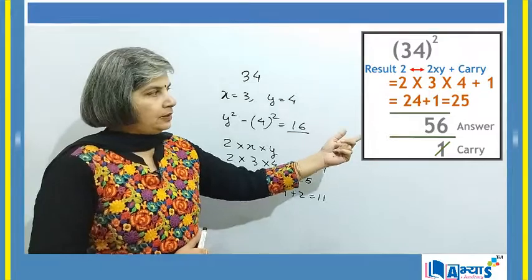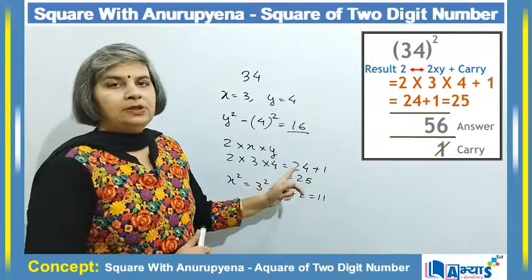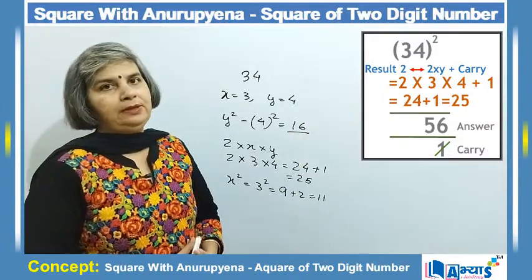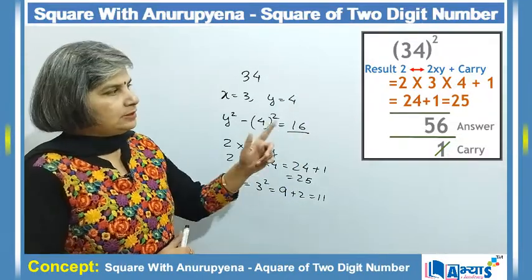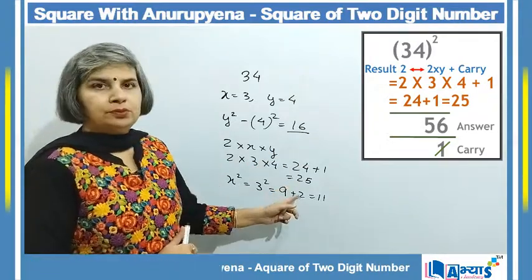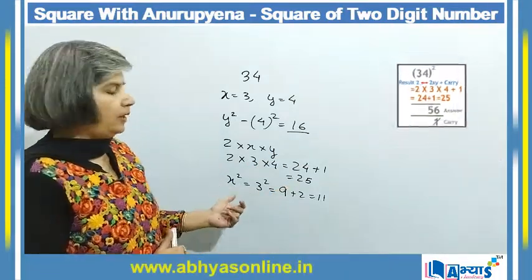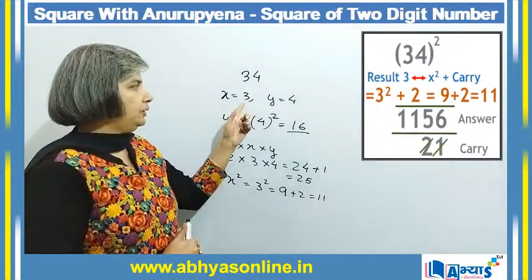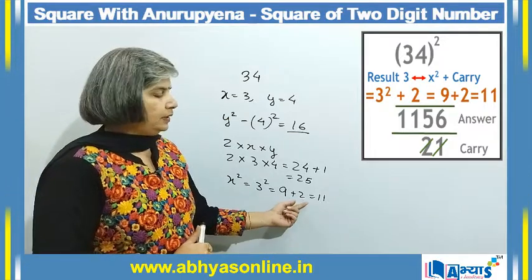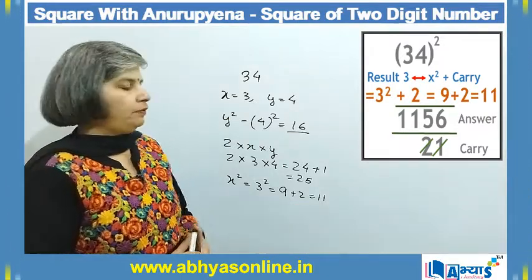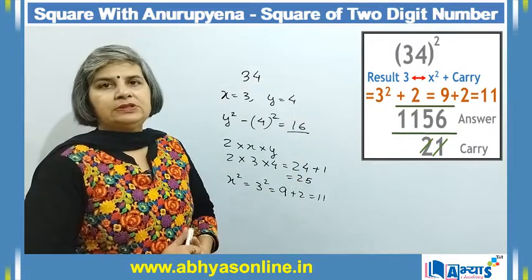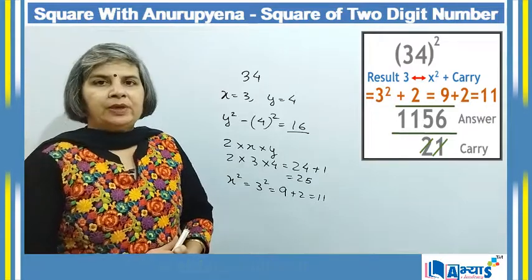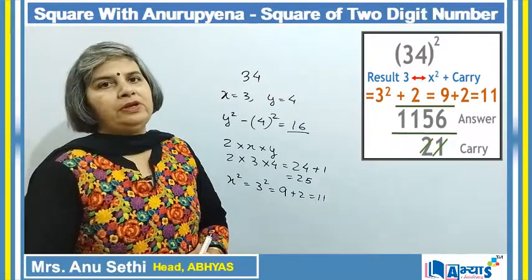Next, I computed 2 × x × y = 24, added the carry of 1 to get 25, prefixed 5 in the answer, and carried 2 — giving an answer so far of 56. Finally, x² = 9, plus the carry of 2, equals 11, which is prefixed to give the final answer of 1156.